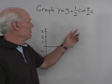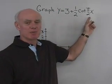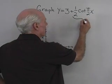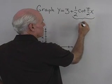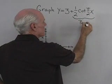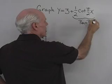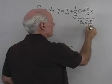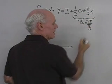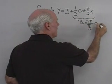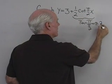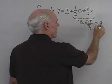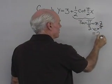Let's try another one — a cotangent function: y = 3 + ½ cot(πx/2). Let's work on the period first. The normal period for cotangent is pi, divided by the coefficient pi/2. That is pi times 2/pi — instead of dividing by pi/2, multiply by its reciprocal 2/pi — the pi's cancel out, giving a period of 2.